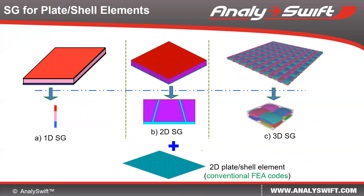For structures with one dimension much smaller than the two other dimensions, we model them using plate and shell elements. Depending on the microstructure, the structure genome can be chosen correspondingly: 1D for laminates, 2D for plates and shells featuring heterogeneity in one in-plane direction, and 3D for plates and shells with heterogeneity in both in-plane directions. SWIFT-CON performs homogenization to compute equivalent plate and shell properties as inputs for 2D plate and shell analysis, then performs de-homogenization to predict 3D local fields within the original structure.